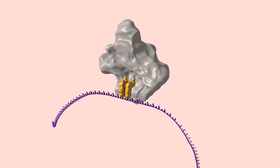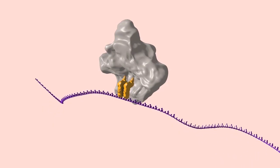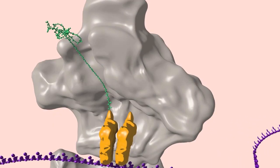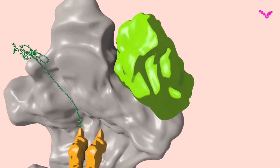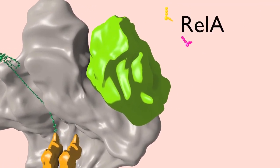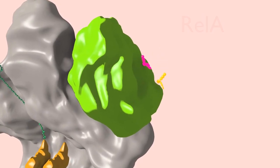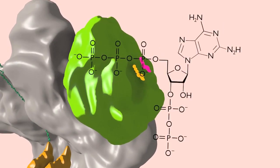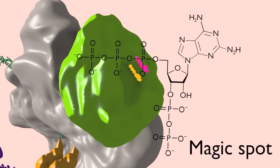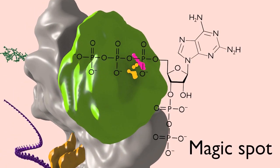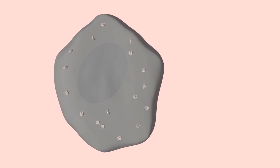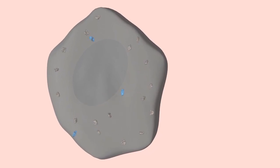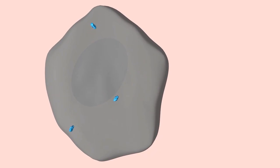These unproductively bound tRNAs effectively block further protein synthesis. Additionally, they trigger a stress response known in bacteria as the stringent response. Ribosomes bound by uncharged tRNAs recruit a protein factor known as REL-A, which when bound in this state promotes the synthesis of a small molecule ppGpp, or magic spot, from GTP and ATP precursors. Magic spot, in turn, triggers a series of downstream events that ultimately lead to the downregulation of ribosome synthesis and the increased synthesis of key factors required for recovery from stress.